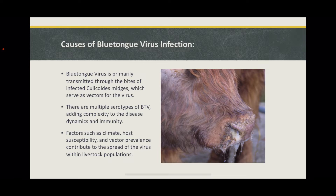The presence of multiple serotypes complicates vaccine development and immune dynamics. Various factors influence the susceptibility of livestock to BTV including age, breed, and overall health status. Young animals and certain breeds may be more vulnerable to severe clinical signs. The immune response to BTV infection can vary, impacting the duration and strength of immunity.